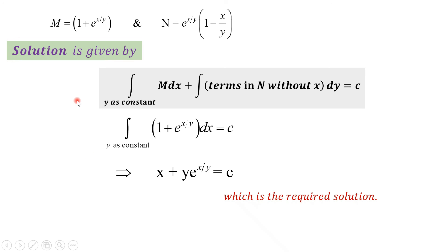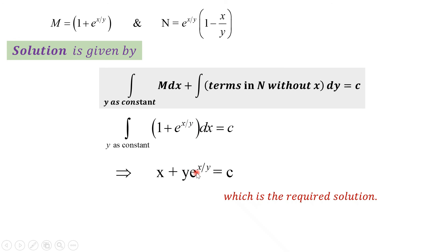The solution is given by: integration of m dx (taking y as constant) plus integration of n dy (taking the term without x) equals some constant c. Substituting, the value of m is 1 + e^(x/y). For n, taking the term without x — the remaining term is nothing, so the value of n is 0. Thus, integration of (1 + e^(x/y))dx = c. On integration: x + e^(x/y)·y = c, which is the required solution.